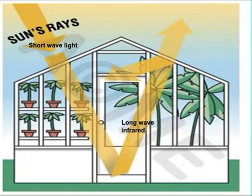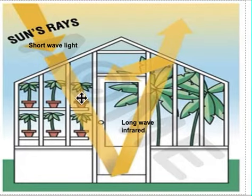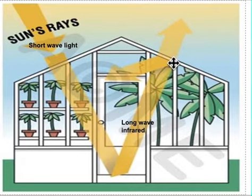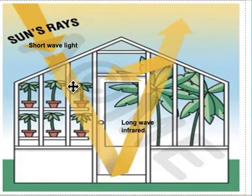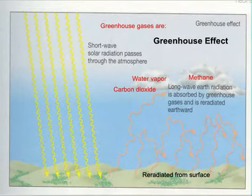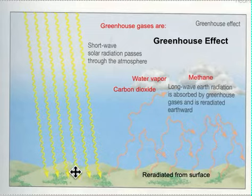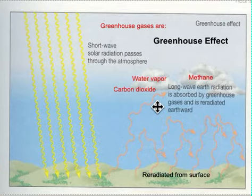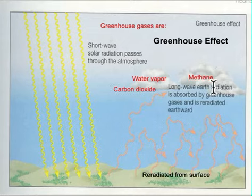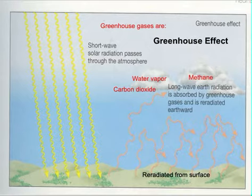Let's review the greenhouse effect. Short-wavelength sunlight comes in and gets absorbed by the Earth. At night, long-wavelength heat — otherwise known as infrared — is given off. But greenhouse gases act like greenhouse glass: they let short-wavelength radiation in but won't let the long-wavelength infrared out, trapping heat. In the atmosphere, short-wavelength sunlight comes in, is absorbed by the Earth, and is re-radiated as infrared heat — but carbon dioxide, water vapor, methane, and nitrous oxide in the atmosphere trap it. That's the basic process of the greenhouse effect.